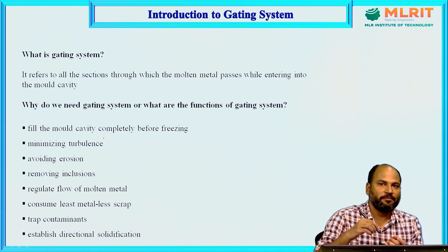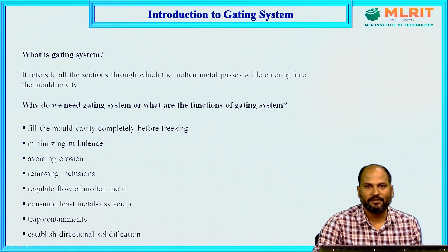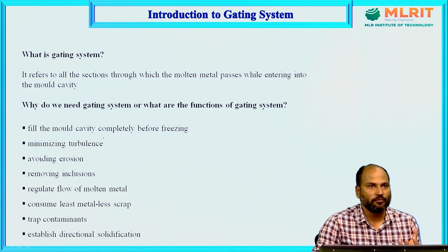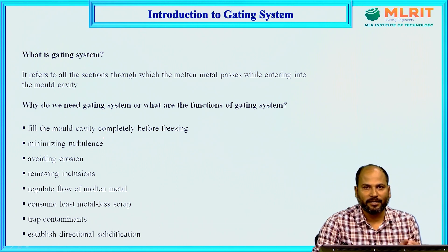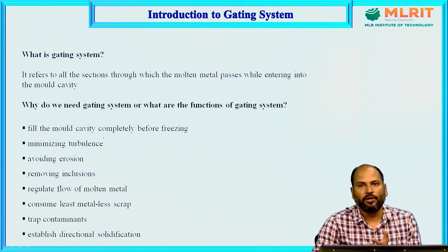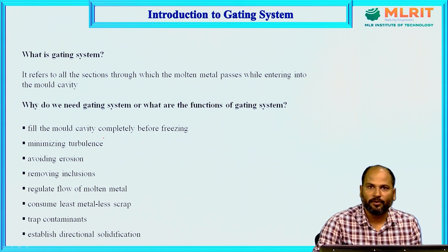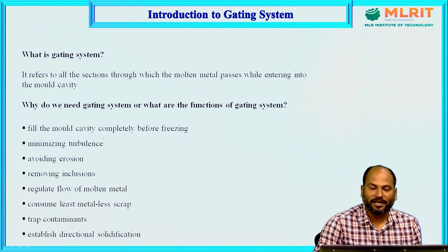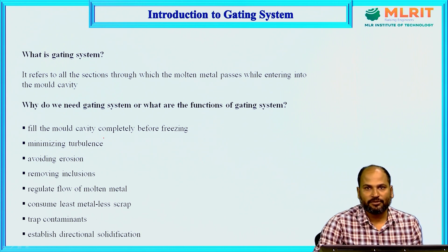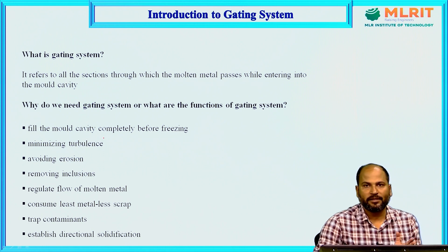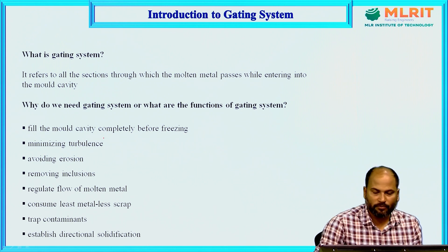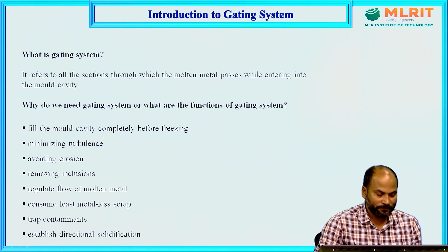The second function is turbulence should be minimized. If turbulence or a whirling effect is present while pouring, it will erode the sand particles if the mould is made of sand. Those eroded sand particles will flow with the molten metal into the mould cavity, and after solidification will appear as defects in the casting. The third function is to avoid erosion — there should be no erosion of sand particles for the same reason.